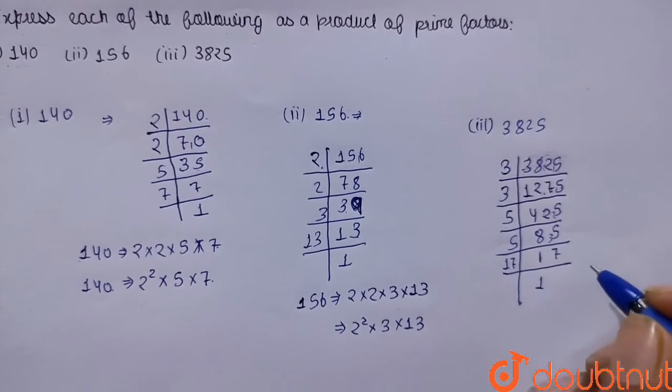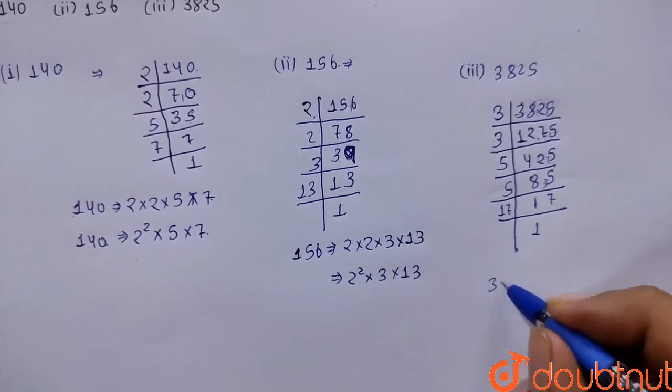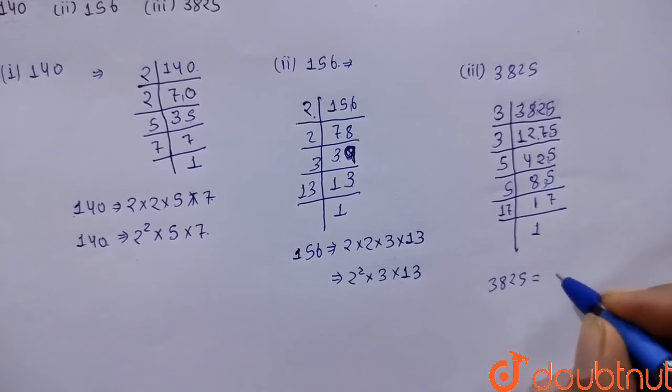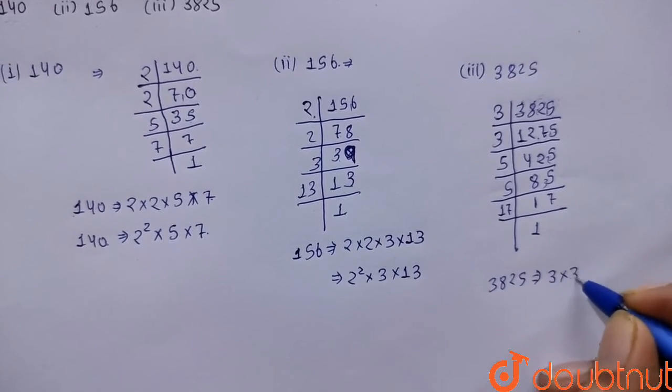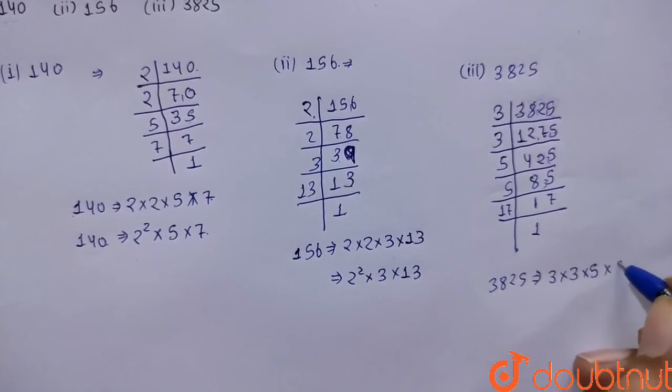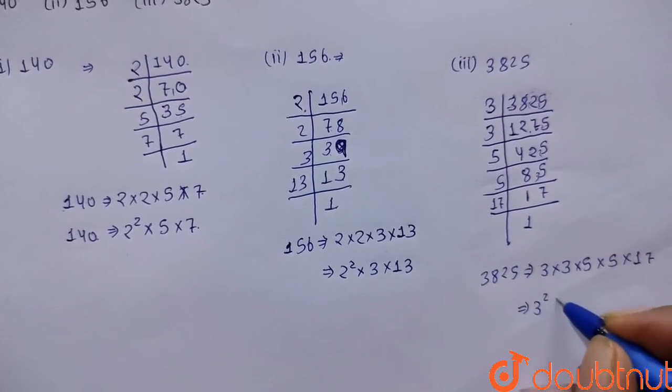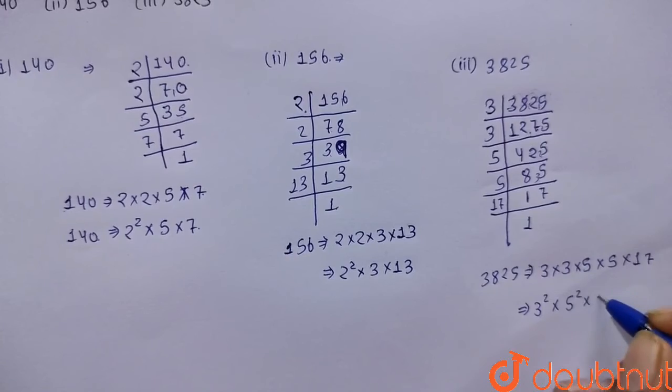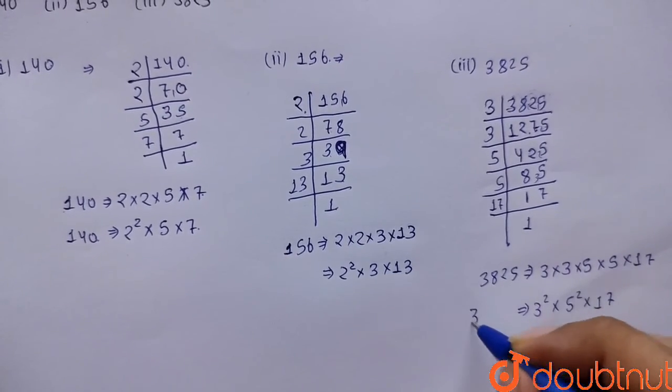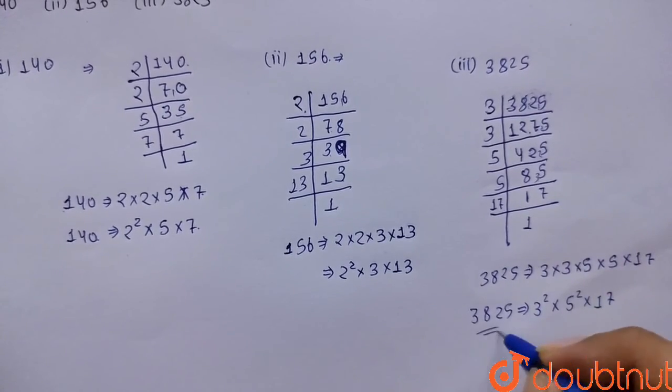So we can write 3825 as its product of its prime factor as 3 into 3 into 5 into 5 into 17. So we can write it as 3 to the power 2, 5 to the power 2 multiplied by 17. So this is our required answer.